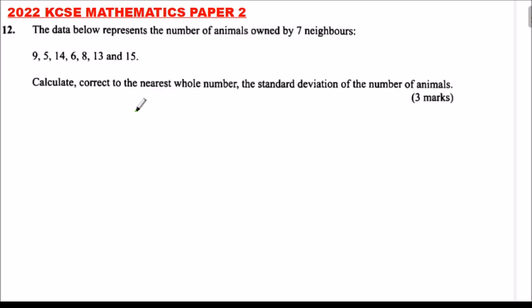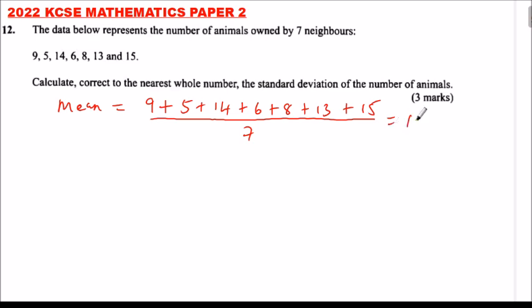Calculate, correct to the nearest whole number, the standard deviation of the number of animals. To get the standard deviation, we need to get the mean. The mean we get by adding up the number of animals for each neighbor. So 9 plus 5 plus 14 plus 6 plus 8 plus 13 plus 15, you divide by the number of neighbors. There are 7. You can compute that using your calculator. You get the mean is 10.